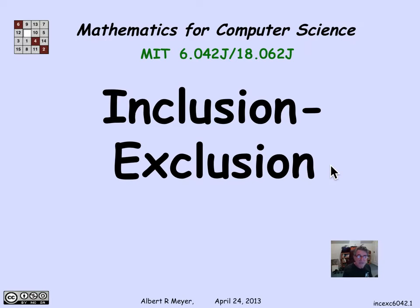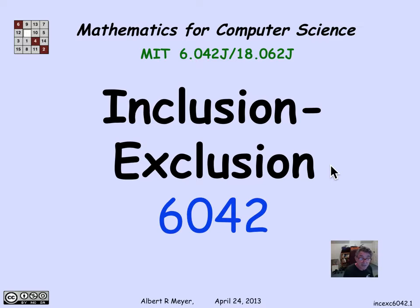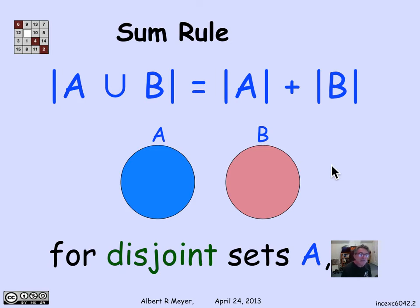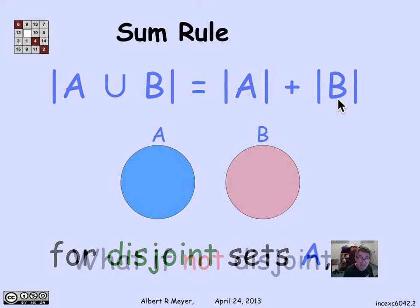The final general counting rule that we'll examine is called inclusion-exclusion. It is a straightforward generalization of the sum rule, at least in the simple case of two sets that we'll look at first. The sum rule says that if you have two sets A and B that are disjoint — no overlap between A and B — then the size of A union B is equal to the size of A plus the size of B. That's obvious; we took that as a kind of basic axiom.